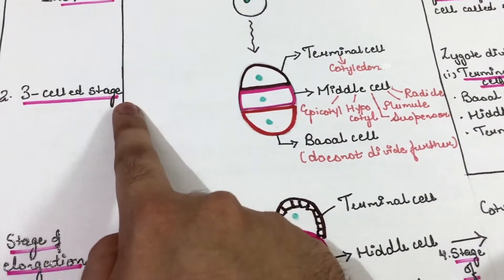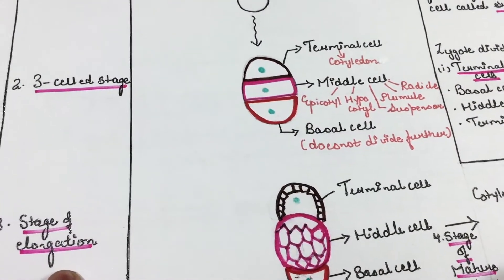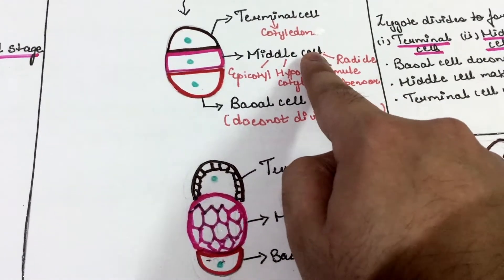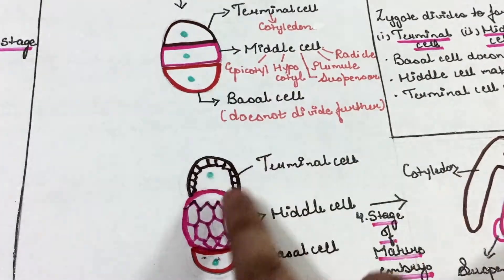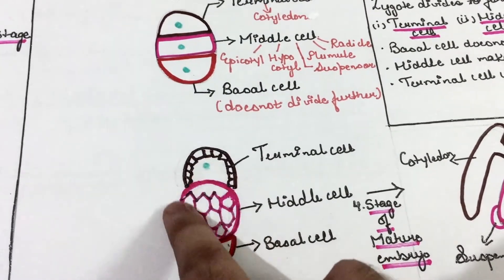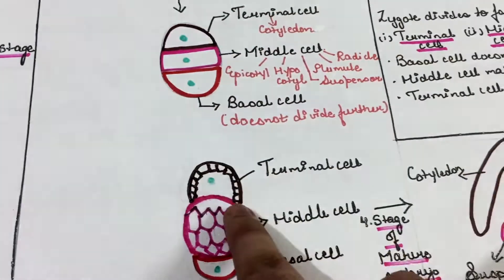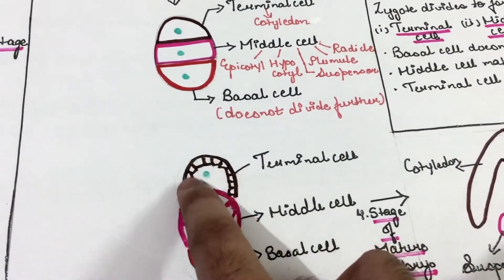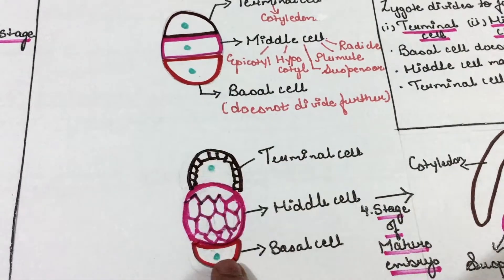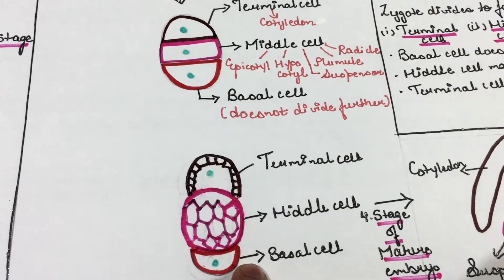After the three-cell stage comes the stage of elongation. In this stage, the terminal cell and the middle cell start their division. As you can see in the diagram, the middle cell shown in pink color has started its division, and the terminal cell shown in brown color has also started its division. The basal cell shown in red color remains as it is and does not divide.